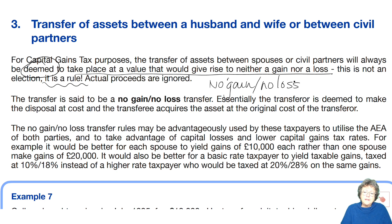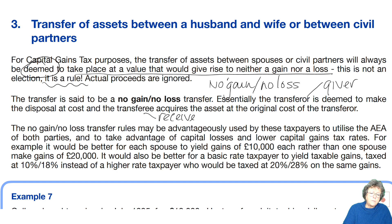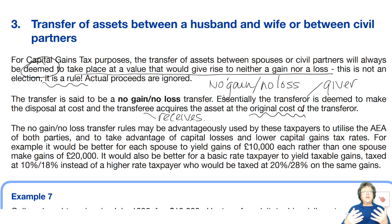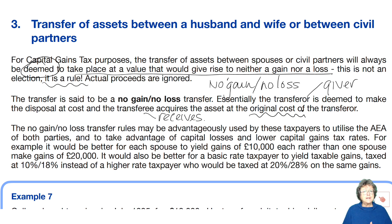The transferor is deemed to make the disposal at cost, and the transferee — the person who receives it — acquires it at that same cost. This is advantageous if you have a husband and wife where one has significant gains and the other has no gains, is not using their AEA, and perhaps not even using their basic rate band — meaning gains could be taxed at 10% or 18% for residential property. Planning with the couple ensures they are both using their basic rate bands and AEA.